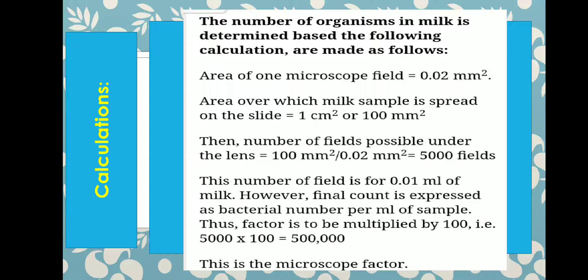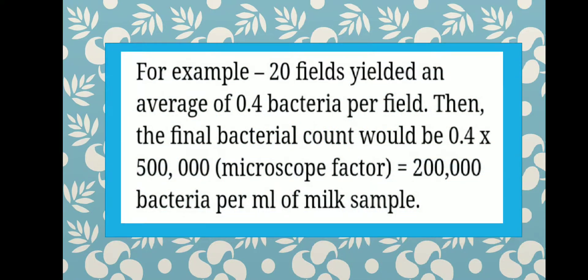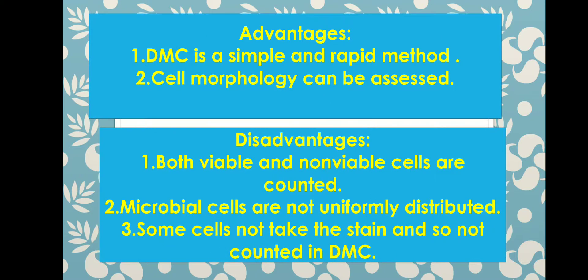To calculate the bacteria per field, count the bacteria in 20 fields and determine the average number of bacteria per field. Suppose this gives 0.4 bacteria per field; then the final bacterial count is calculated as 0.4 × 500,000 (the microscopic factor), giving 2,00,000 (2 lakh) bacteria per ml of the milk sample.